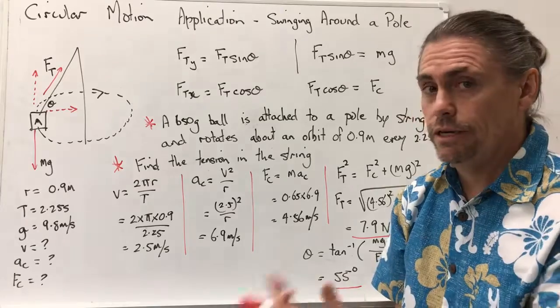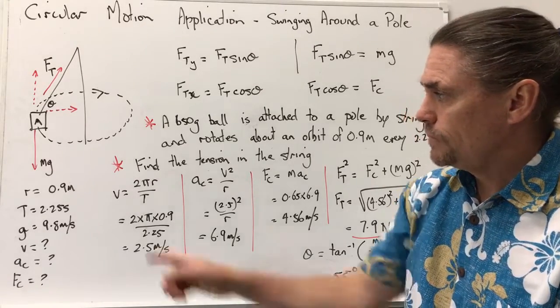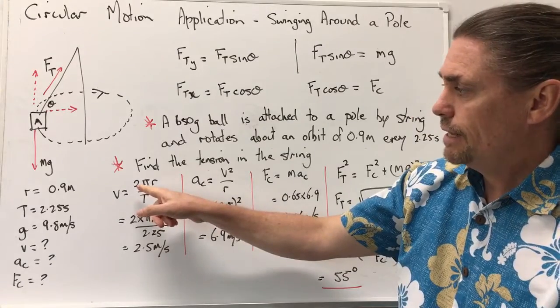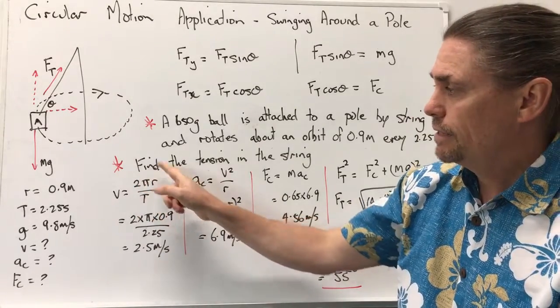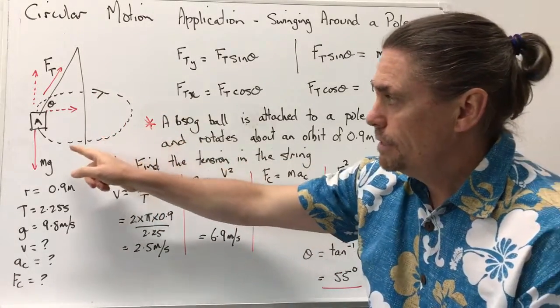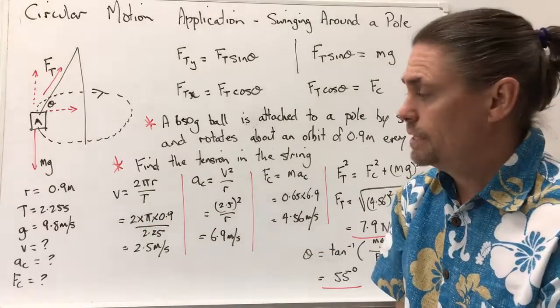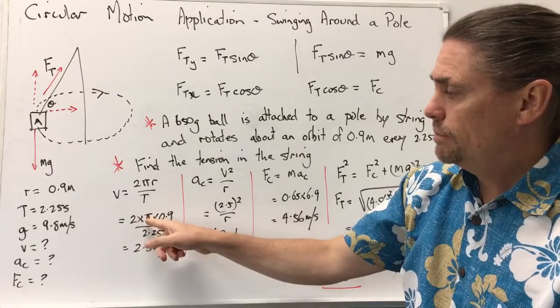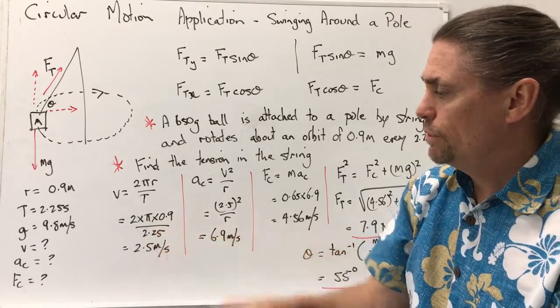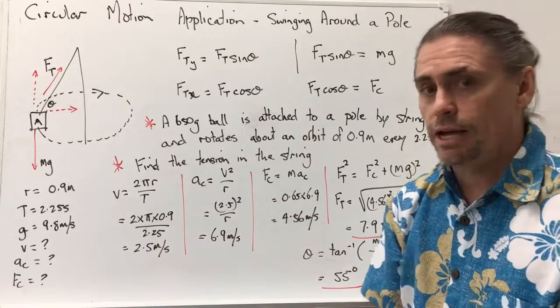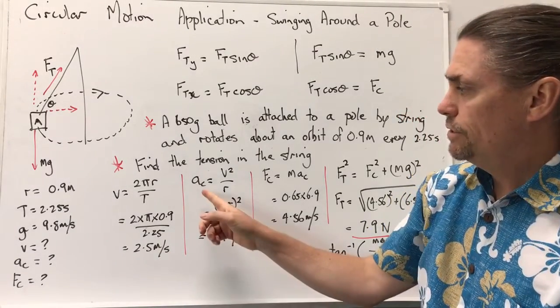So to look at this, we need to go through a few steps. First of all, we need to find the velocity of the object, and we get that as being equal to 2πr, in other words the total circumference divided by the time that it takes to travel that circumference. So we have 2 times π times 0.9 over 2.25, being the period, gives us a speed of 2.5 metres per second.